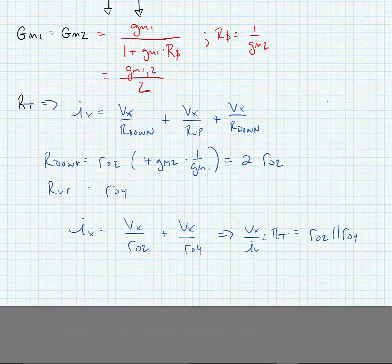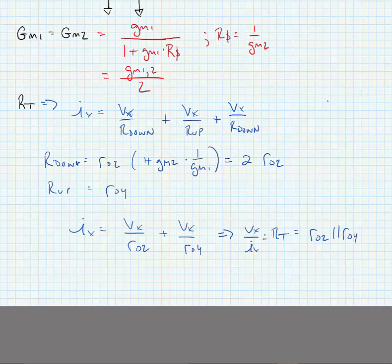So our total expression for voltage gain then becomes AV or ADM is equal to GM over 2 times R02 in parallel with R04 plus GM2 over 2 times R02 in parallel with R04.